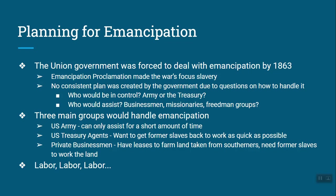Ultimately, three main groups handled emancipation. First was the US Army — very often the first to meet these freed slaves — but they could only assist briefly since they only had supplies for the army, giving former slaves some food, a blanket, maybe a tent, and moving on. Then there were US Treasury agents, whose main goal was financial: get former slaves back to work as quickly as possible so they'd pay taxes and the government wouldn't have to support them. Finally, there were private businessmen from the North who leased farmland taken from Southerners and wanted former slaves to work the land. One way or another, former slaves were going to be used for labor.